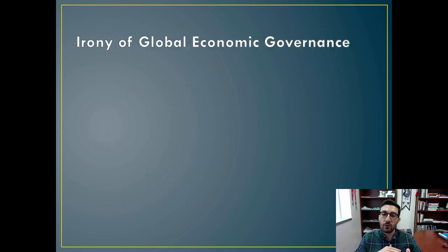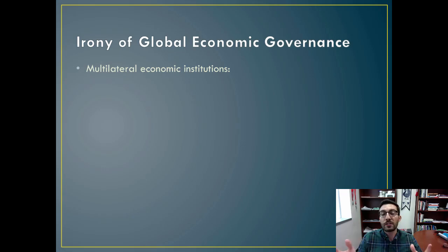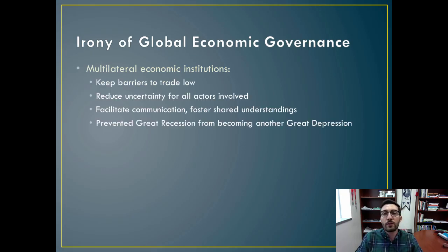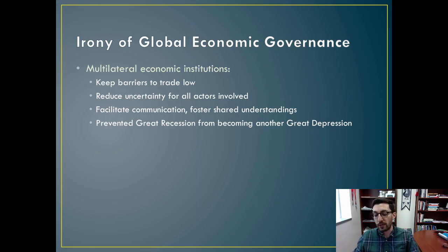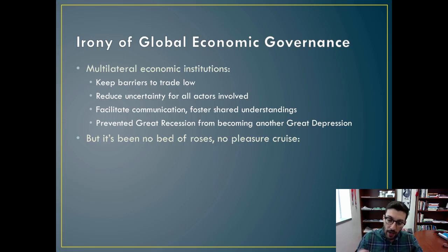Shifting gears to another article on the irony of global economic governance. We already know about multilateral economic institutions — we've talked about the World Trade Organization and the International Monetary Fund. What do they do? They keep barriers to trade low, reduce uncertainty for all actors by providing a regular place to air grievances and resolve differences, facilitate communication, and foster shared understandings. The argument from this article is also that these institutions prevented the Great Recession after 2008 from becoming another Great Depression. But as the Queen song goes, it's been no bed of roses, no pleasure cruise.